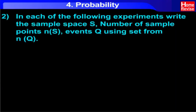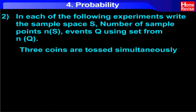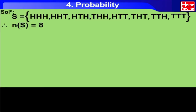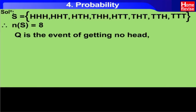In each of the following experiments, write the sample space S, number of sample points N(S), events Q using set notation and N(Q). Three coins are tossed simultaneously. Q is the event of getting no head.